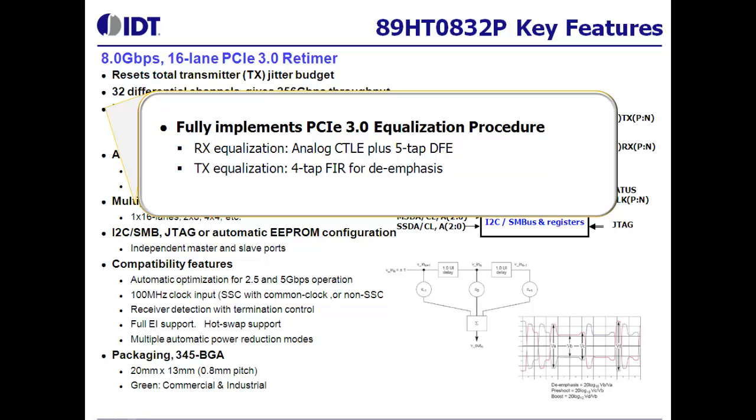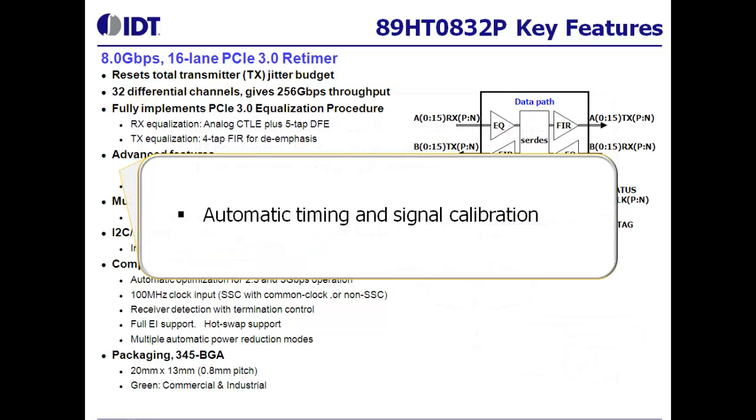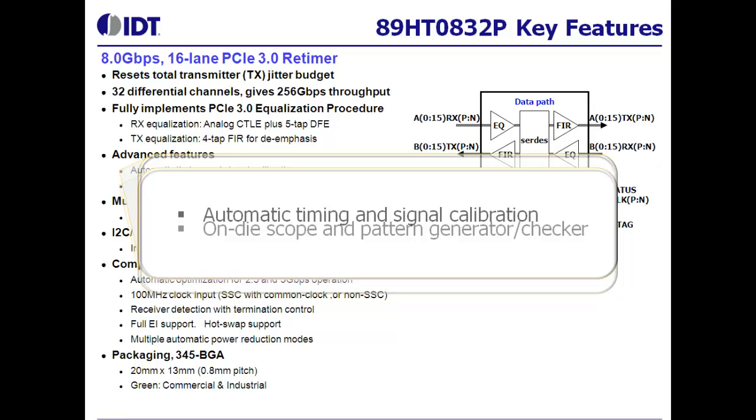Newly defined in the PCIe 3.0 standard is an equalization procedure which automatically adjusts the receivers and transmitters for a low 10 to the minus 12 bit error rate. IDT's retimers fully implement this procedure on both upstream and downstream ports. The T0832 retimer provides automatic power-on calibration of key signal timing and amplitudes for the best signal quality.